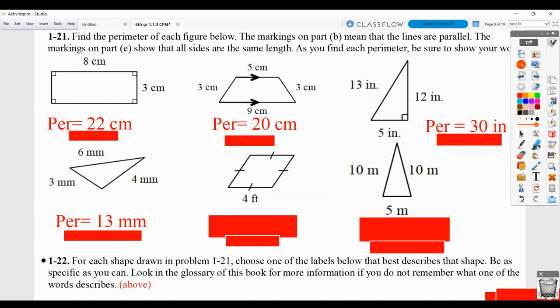These signs here mean congruent. So this would be basically a rhombus. It has all congruent sides. And if each side is 4 feet, then 4 plus 4 plus 4 plus 4, or 4 times 4, is 16 feet. And here, 10 plus 10 plus 5 would give us a perimeter of 25.